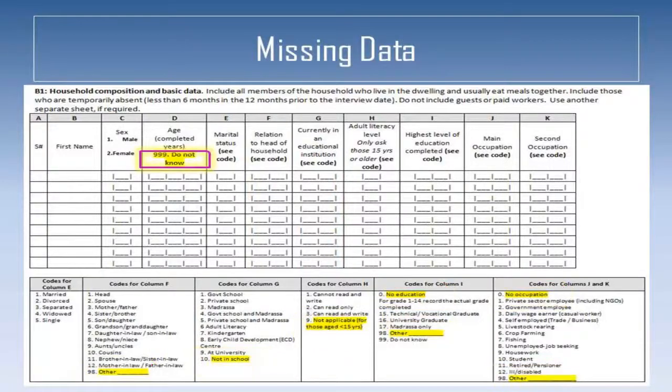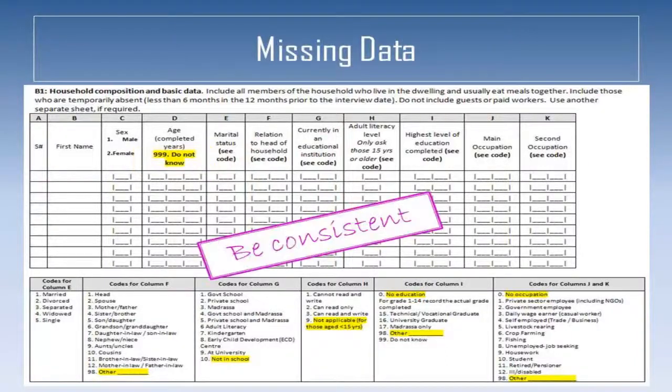When collecting numeric data, ensure the value for missing cannot be a plausible response. For example use minus 99 or a number 10 times that which could be considered a response, such as 999. Try to use consistent missing codes. This will assist the enumerator and reduce the number of mistakes during data collection.